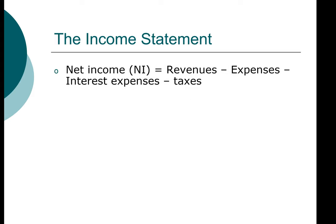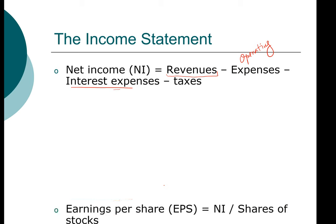The most important equation in the income statement is the relationship that identifies net income. Net income represents the revenue minus all the expenses. We distinguish different types of expenses. In general, we have operating expenses, which is what it takes to keep the company going. Then we have interest expense, which is considered a financial expense. And then tax, which is money that we pay to the government.